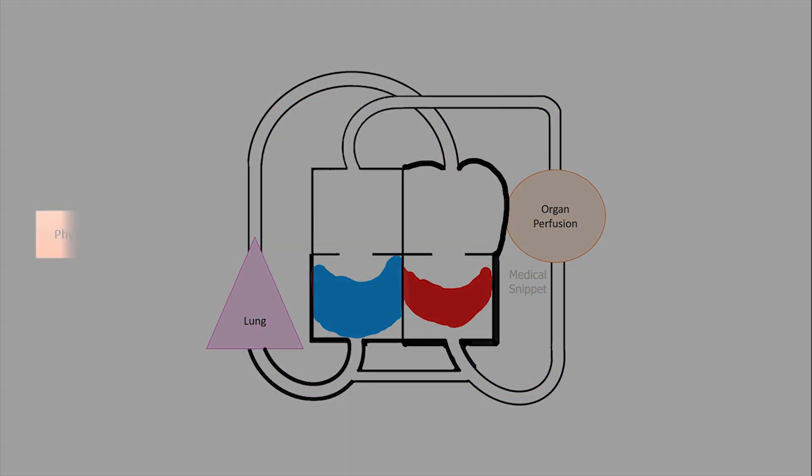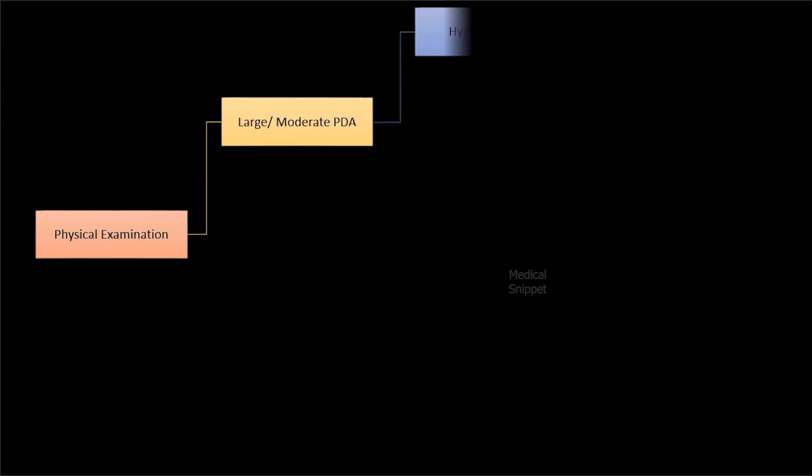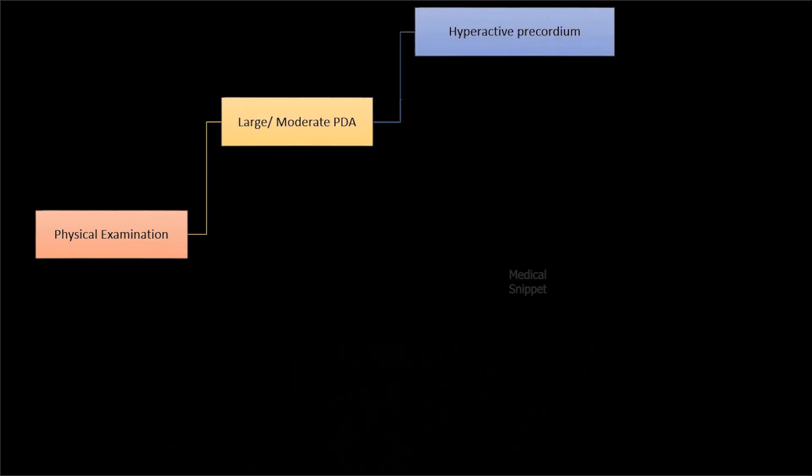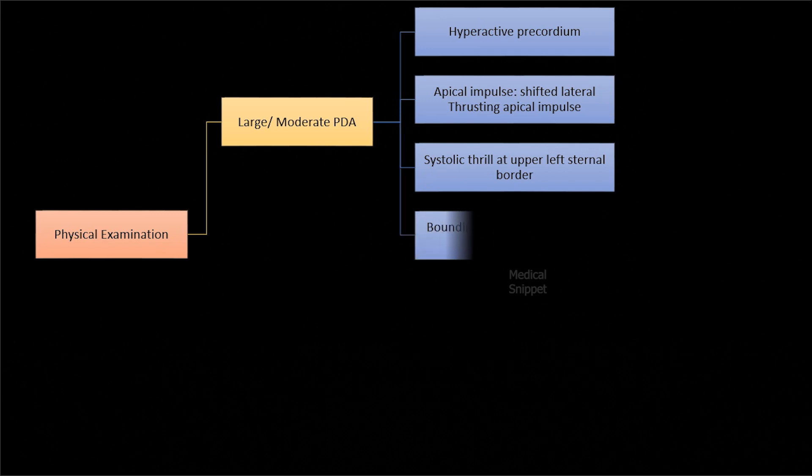On physical examination, babies with large to moderate-sized PDA will have hyperactive precordium. Apical impulse is displaced laterally and is of thrusting type. There is systolic thrill at the upper left sternal border. The peripheral pulse is bounding and jerky.